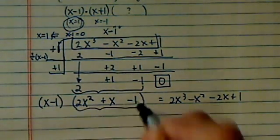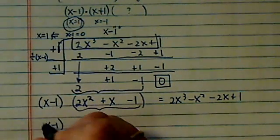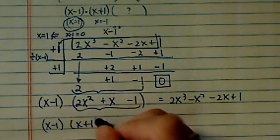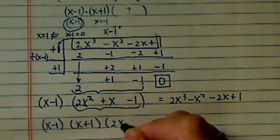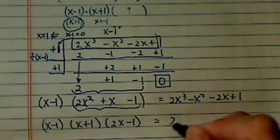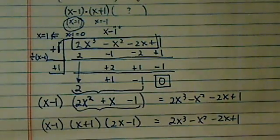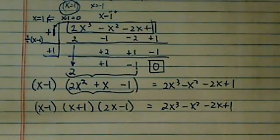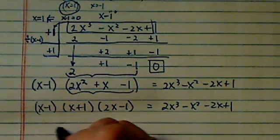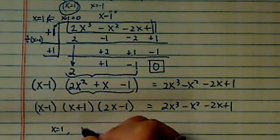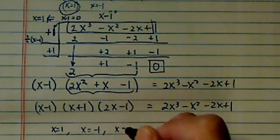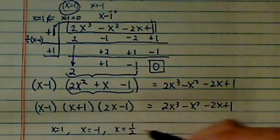From here, this set is actually factored. x plus 1, and I have a 2x minus 1. Synthetic division helps us to reduce the amount of work we needed to divide using long division. So from here, we see x equal to 1 is a solution, x equal to minus 1, and x equal to half.